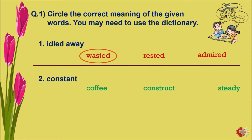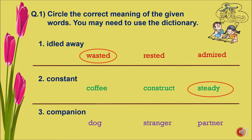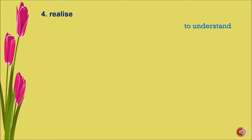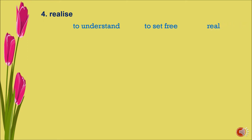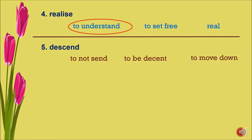Number three: companion — options are dog, stranger, and partner. The correct option is partner. Number four: realize — options are to understand, to set free, and real. The correct option is to understand. Number five: descent — options are to not send, to be decent, and to move down. The correct meaning is to move down.